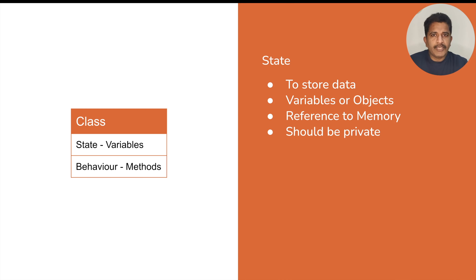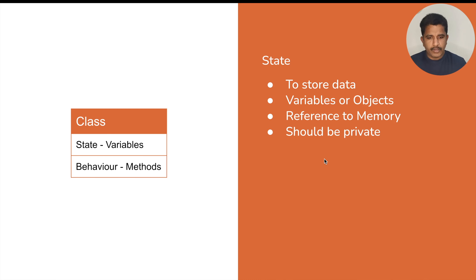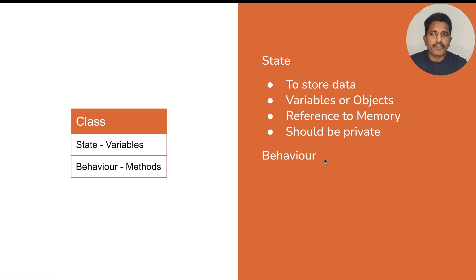If we don't keep our state variables private, outside members can access them directly and modify the values with invalid data, which might create trouble for your entity. So in order to avoid that, we have to keep our properties or variables private. Now if the state is private, how are we going to modify the data? That is the responsibility of the behavior — every encapsulated entity has a behavior module, and that behavior should have access to the state, be able to modify it or read it.